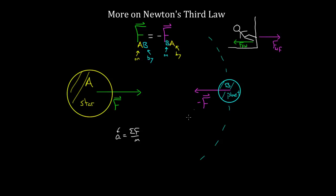Newton's third law is universal, but people still have trouble identifying these third law partner forces. One of the best ways to identify them is by listing both objects. Once you've listed both objects, to figure out the partner force you can just reverse those labels. So if one of my forces is the force on the wall by my foot, the partner force is the force on my foot by the wall.